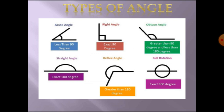Next, types of angles. What are the different types of angles? An angle which is less than 90 degrees — from 0 to 89 degrees — it is an acute angle. An angle which is exactly 90 degrees is a right angle. An angle greater than 90 degrees but less than 180 degrees is called an obtuse angle. An angle of exactly 180 degrees, or two right angles, is called a straight angle. An angle greater than 180 degrees is called a reflex angle. An angle of 360 degrees is called a full rotation or complete angle.